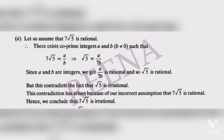For 7√5: assume it is rational with co-prime integers a and b where b ≠ 0. Keep √5 alone by moving 7 to the denominator: √5 = a/(7b). Since a/(7b) is rational, √5 would be rational — but we know √5 is irrational. This contradiction arose from our wrong assumption, so 7√5 is irrational.